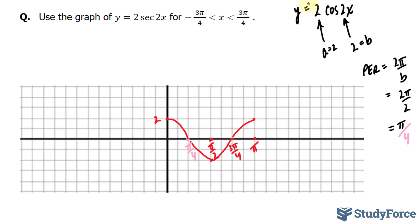Now, in this particular equation, y equals 2 cosine 2x, we don't have a phase shift. And if you don't have a c value, which in our case we don't, there's no phase shift. So we don't have to worry about that. They want us to graph this between negative 3π over 4 and 3π over 4. So we have to stop graphing after this point.